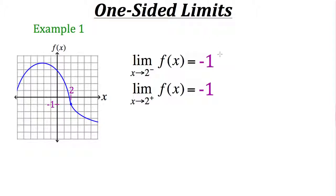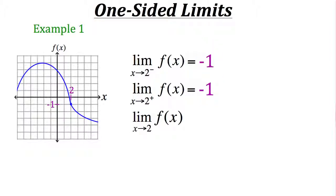The purpose of knowing our two one-sided limits is that if they both have an equal value, we know the function will have a limit as x approaches that input value — in this case 2 — and that limit will be negative 1. Additionally, when we look at the graph and go to x equals 2, the output of our function is also negative 1.